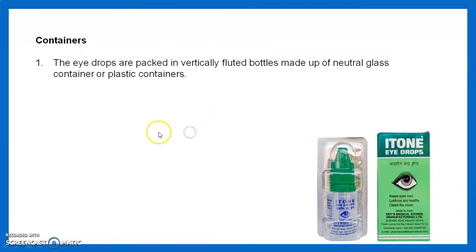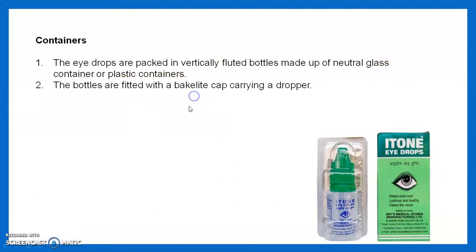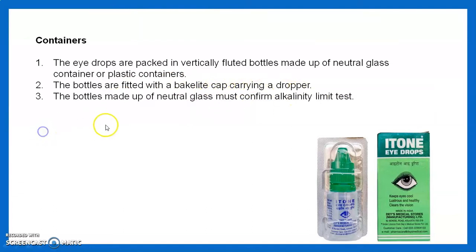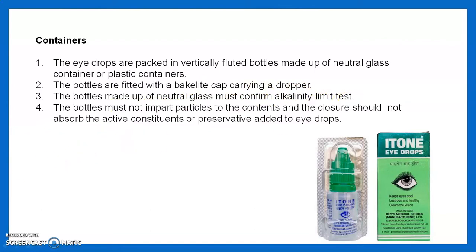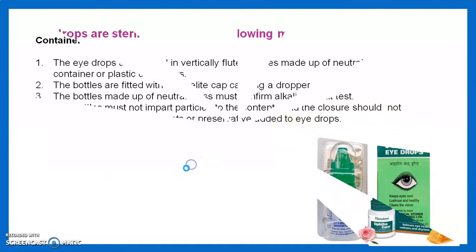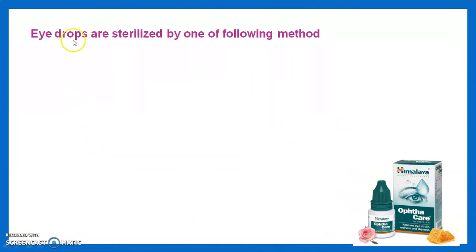Eye drops are packed in vertically fluted bottles made of neutral glass or plastic containers. Bottles are fitted with a backlight cap carrying a dropper. Bottles made of neutral glass must confirm the alkalinity limit test. The bottle must not impart particles to the contents, and the closure should not absorb the active constituent or preservative added to the eye drops.